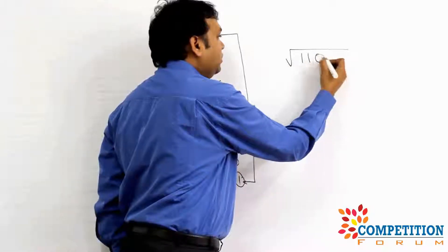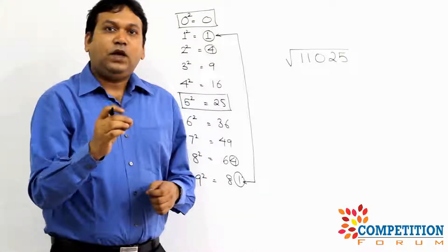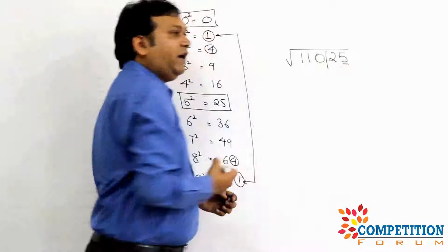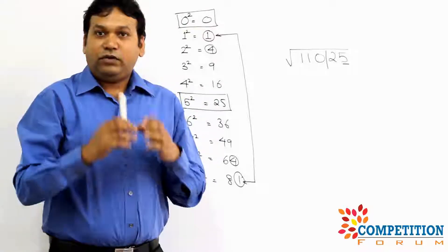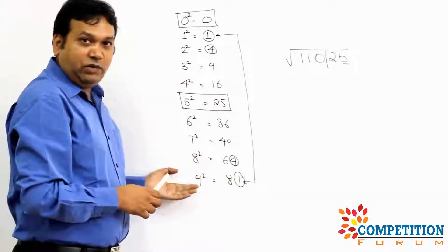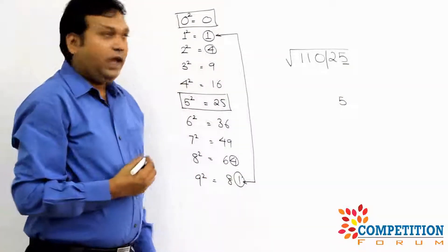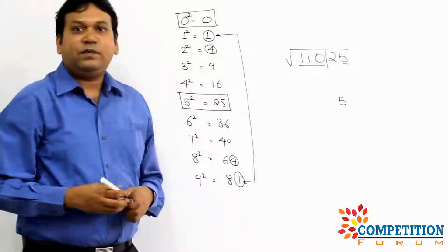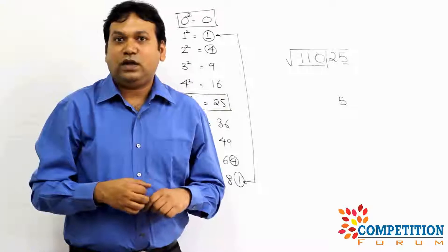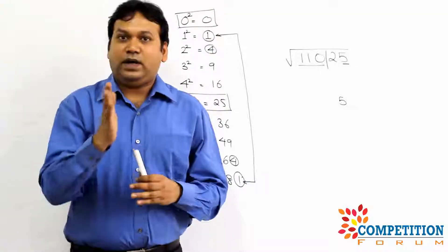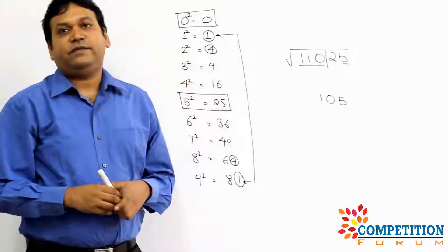Let's try the number 1105. First step: look at the last two digits — 0 and 5. It's ending in 5, so the last digit of the square root will be 5. Next, look at 110. Is 110 a perfect square? 10² = 100 and 11² = 121, so 110 is between 10² and 11². The lower number is 10. So the answer is 105.